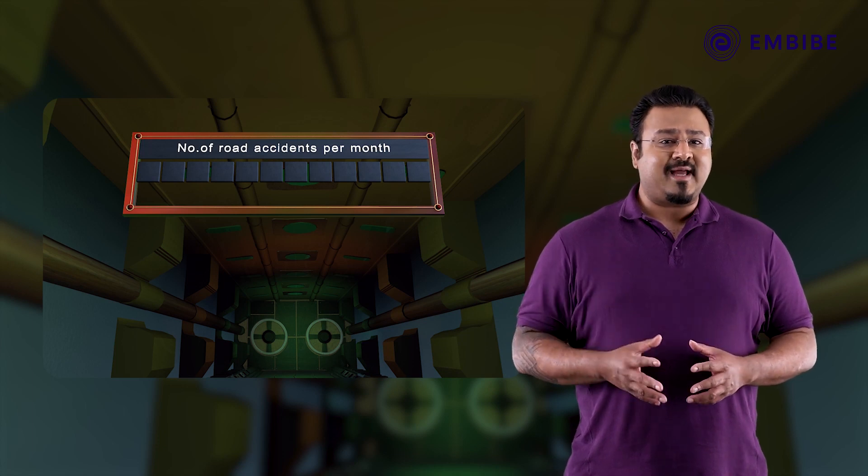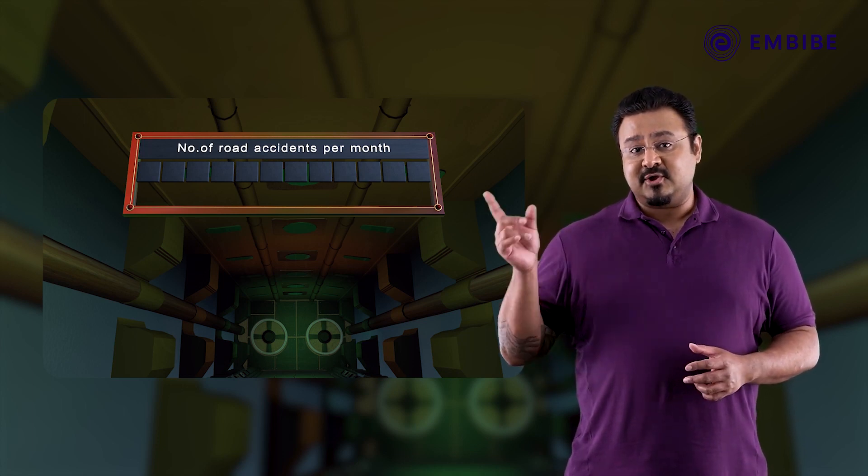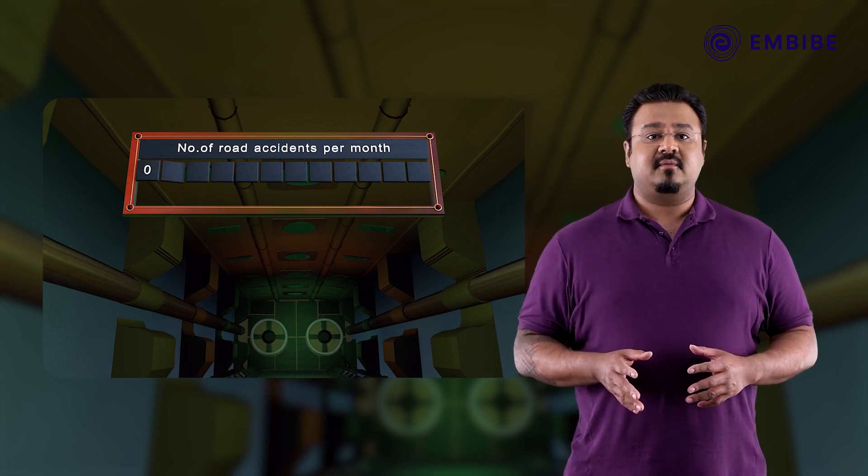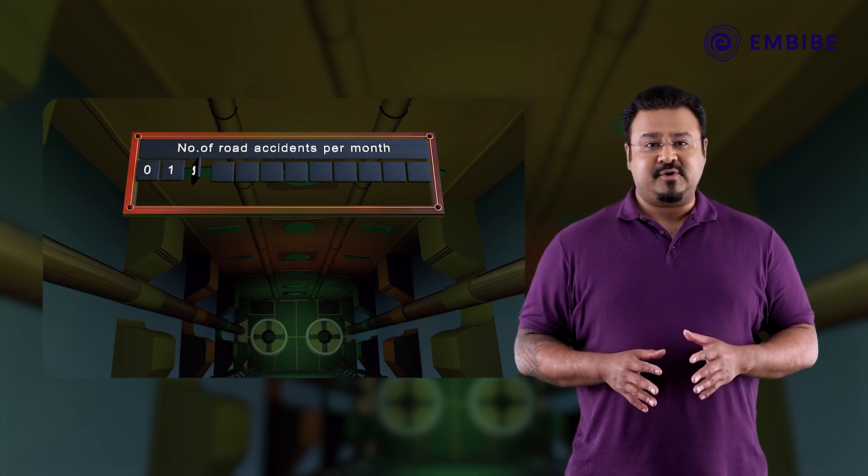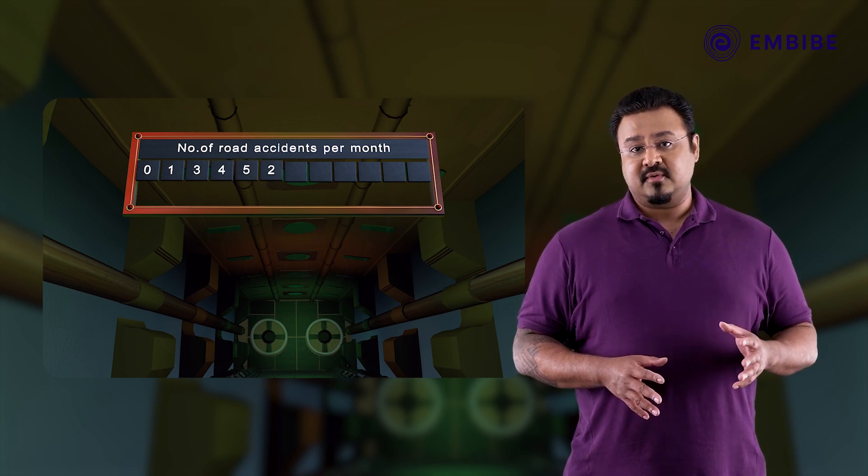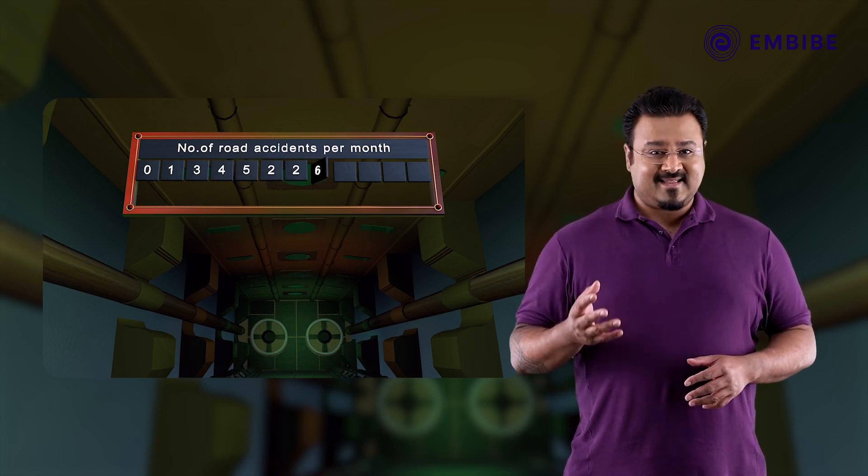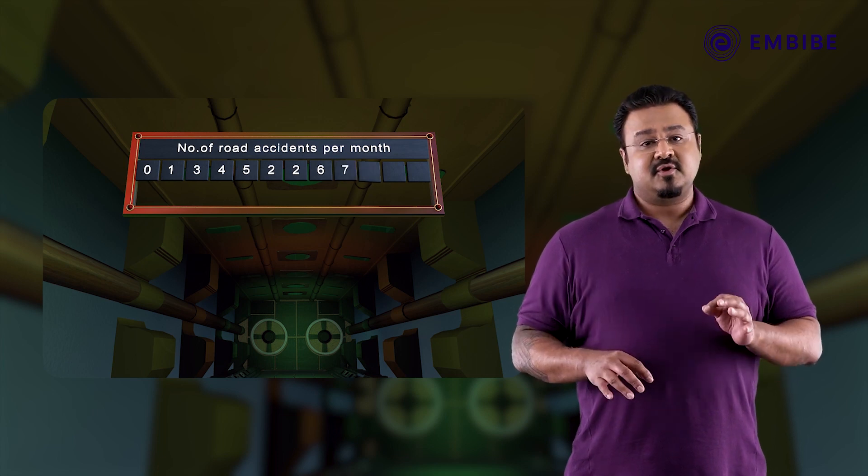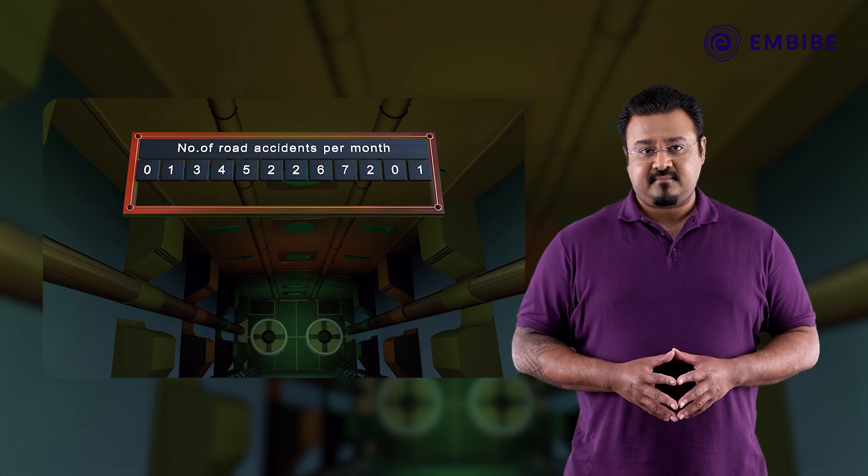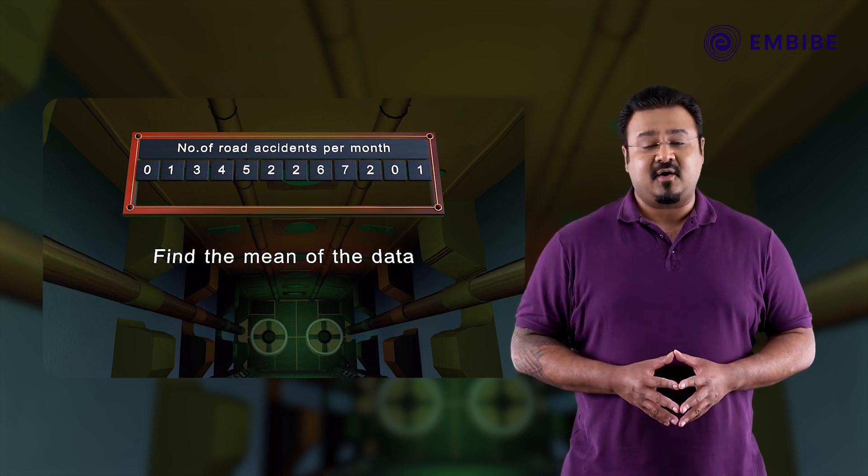The number of road accidents per month during the year 1990 are 0, 1, 3, 4, 5, 2, 2, 6, 7, 2, 0, 1. Find the mean of the data.